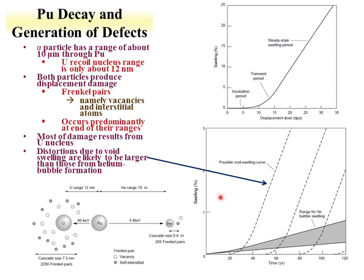Over time, swelling occurs and you have a void swelling curve. The properties of this curve show ranges attributable to uranium recoil and to helium. The helium contributes, but not as much as the void swelling from uranium recoil. Generally, this swelling behavior has three main components as a function of dose, described in DPA — displacements per atom — meaning how many times an atom in the lattice gets displaced. There is an incubation period with no evident swelling, a transition period where swelling increases, and then a steady state where there is a relationship between dose and swelling. The actual swelling as a function of DPA varies with materials and conditions.